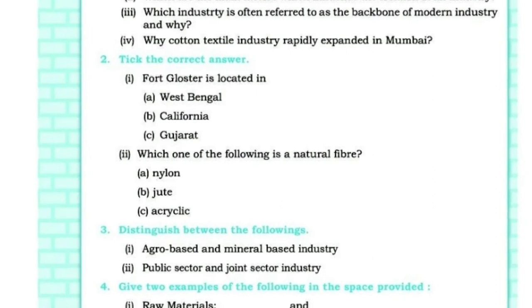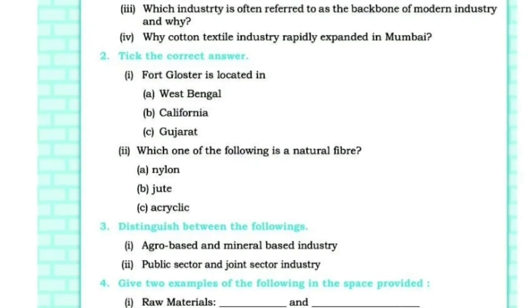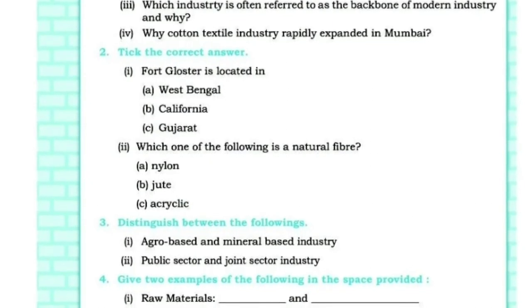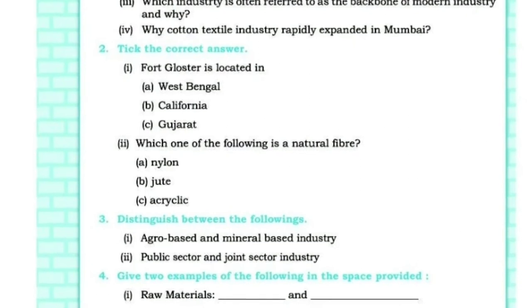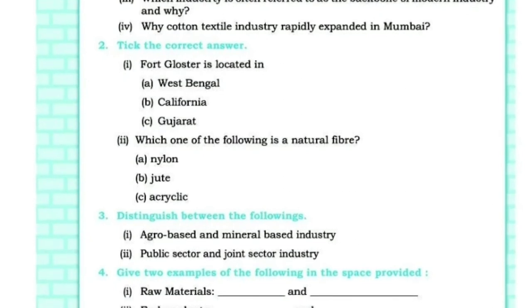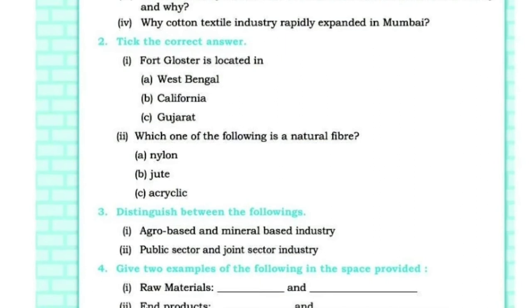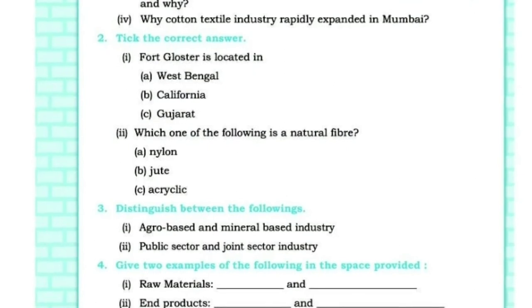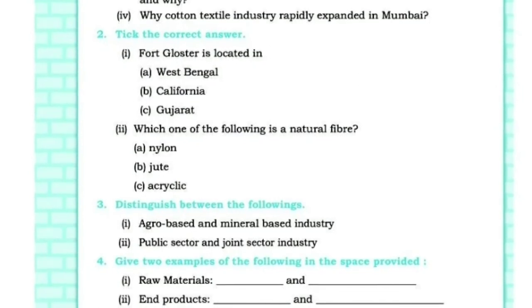Distinguish between agro-based and mineral-based industry: Agro-based industries use plant and animal products as raw materials. Mineral-based industries use mineral waste as raw materials. Agro-based industry is a source of employment for people in rural areas. Mineral-based industry is a source of employment for people in rural as well as urban areas. Examples of agro-based industry include dairy industry. Examples of mineral-based industry include iron and steel industry and heavy machinery industry.